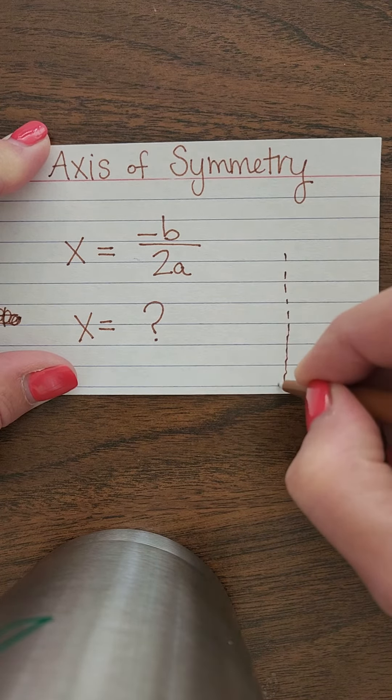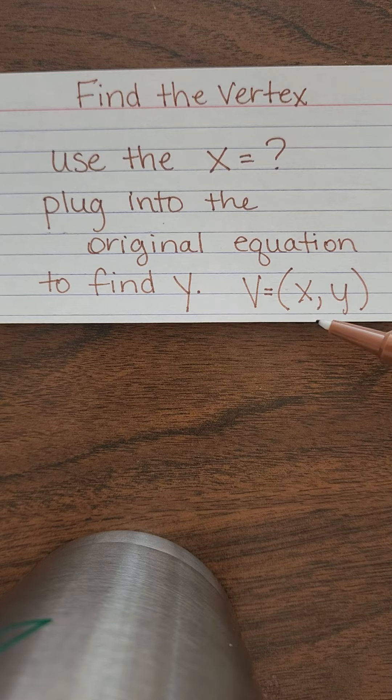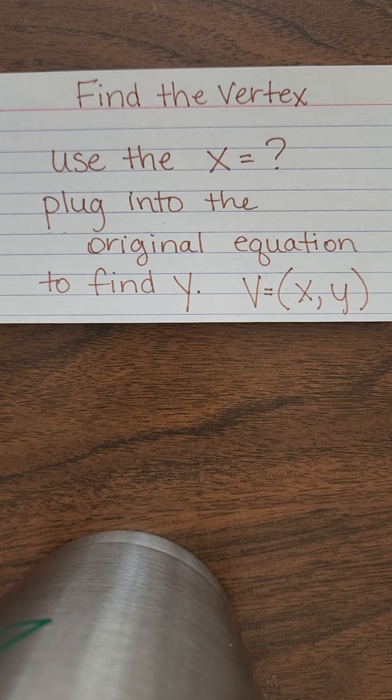And then your very last card for the day that I want you to make is your vertex card. So once you find the X, your axis of symmetry from your last formula, you're going to plug that into the original equation. And when you plug that into the original equation, you're going to be solving for Y. When you find the Y, then you have found your vertex point. Use the X from your axis of symmetry, use your Y from solving the function, and that becomes your vertex. And then by looking at the standard form, you can decide whether this vertex is a max or a min.